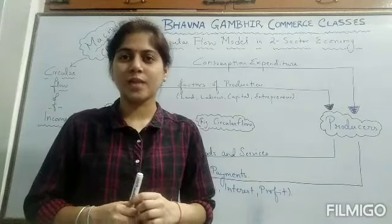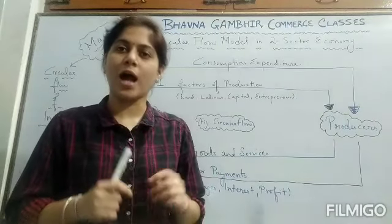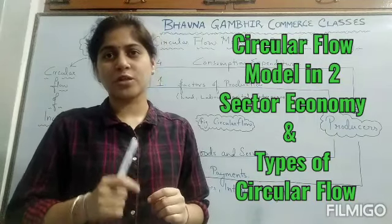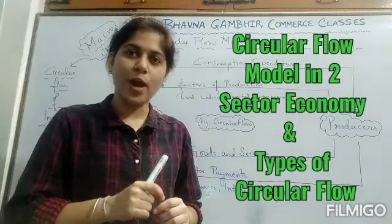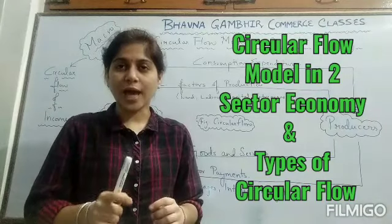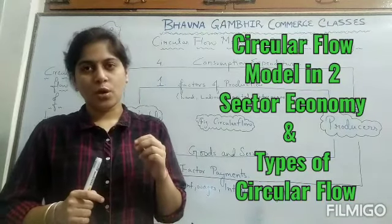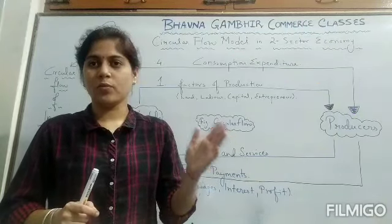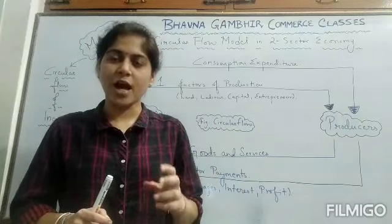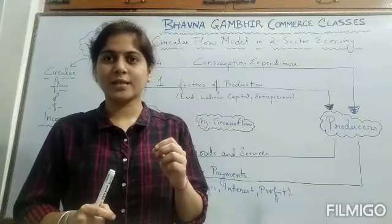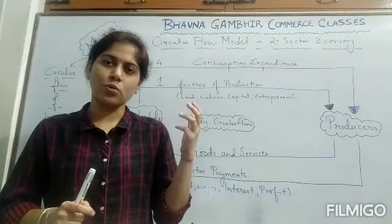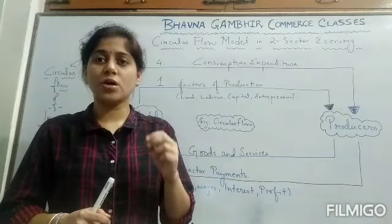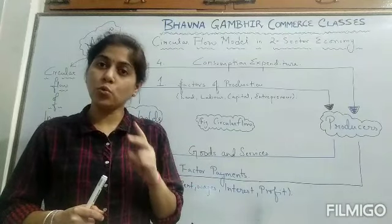Today we will study Chapter 1 and cover the Circular Flow of Income in the two-sector model with a diagram and explanation. We will also study Real Flow and Money Flow, which are the two types of Circular Flow of Income. This video is related to the study material you will find in the description box — you can download or open it. Let's look at our first topic: Circular Flow of Income in the two-sector model.